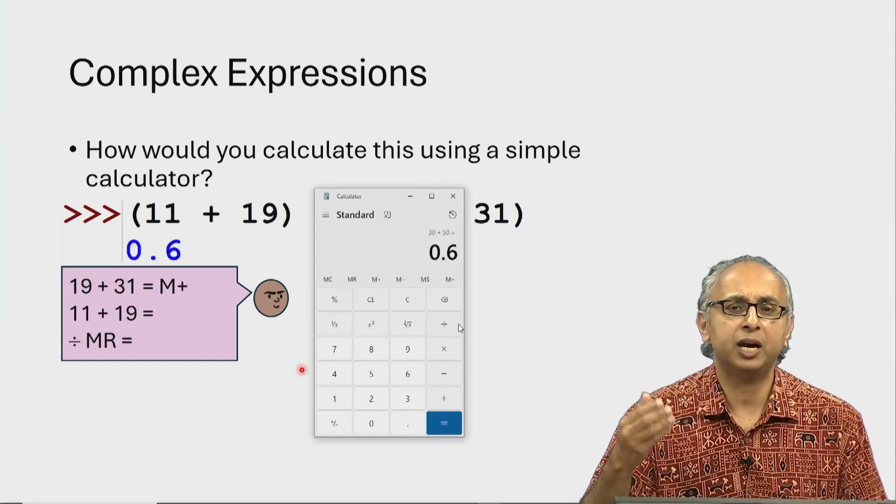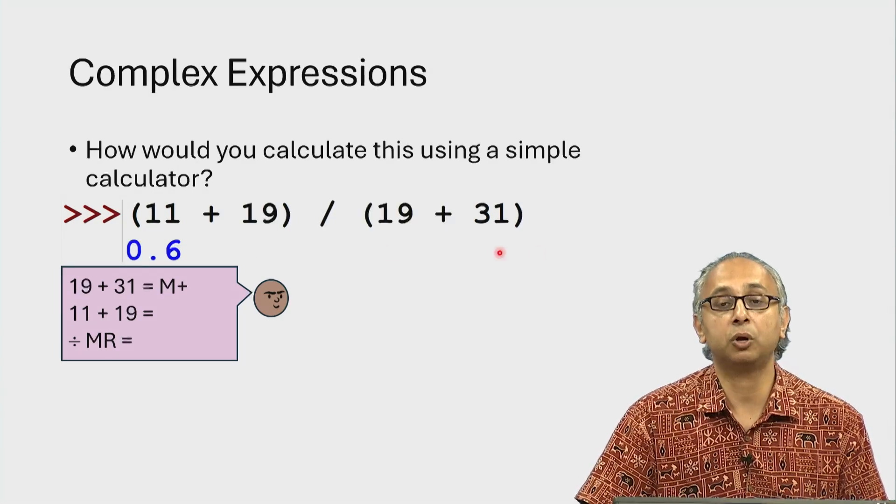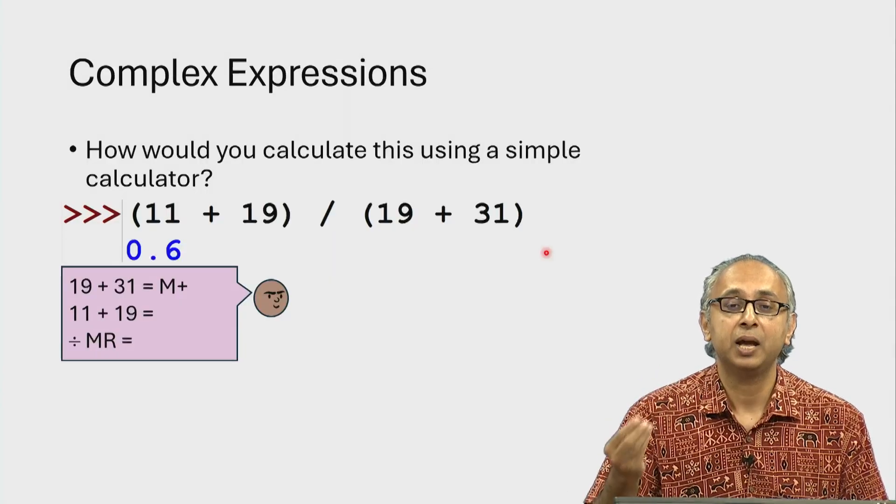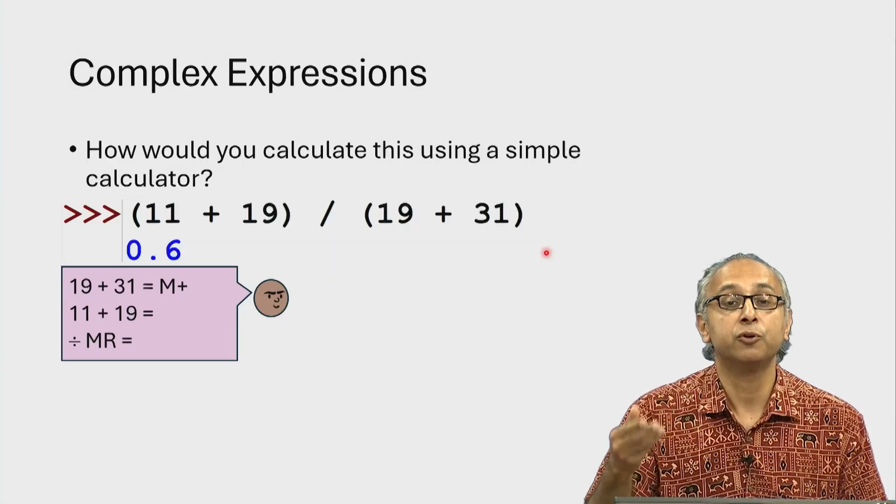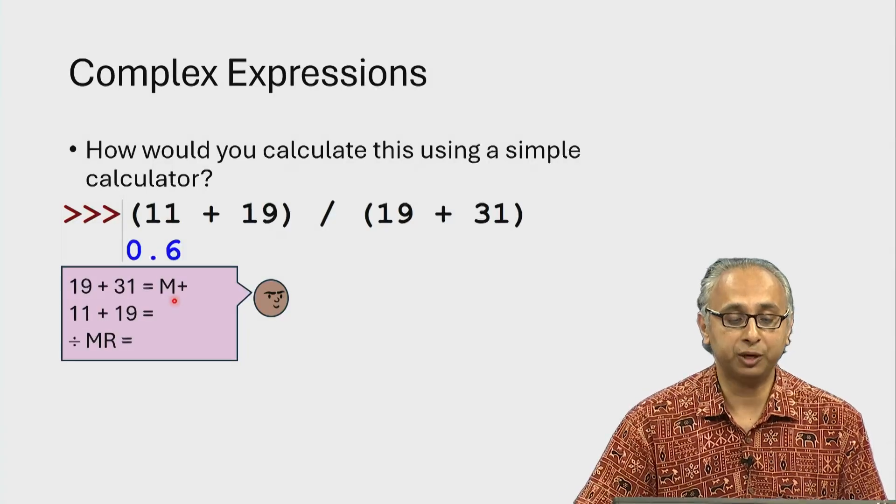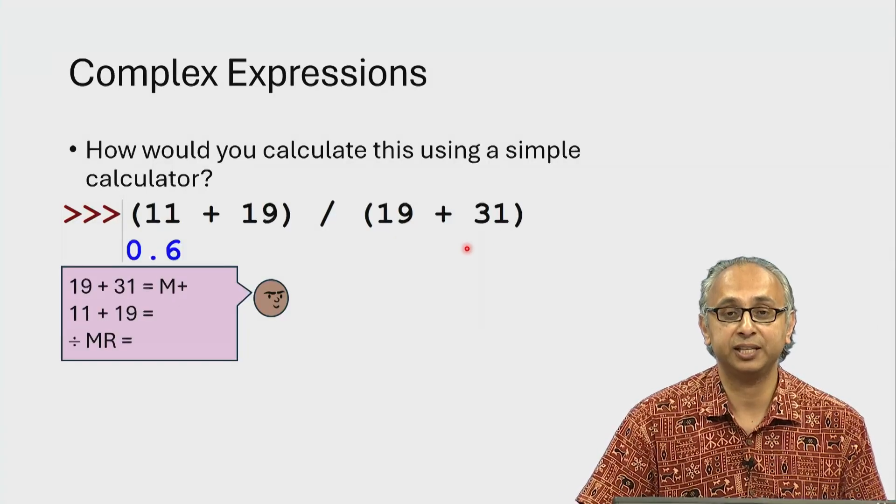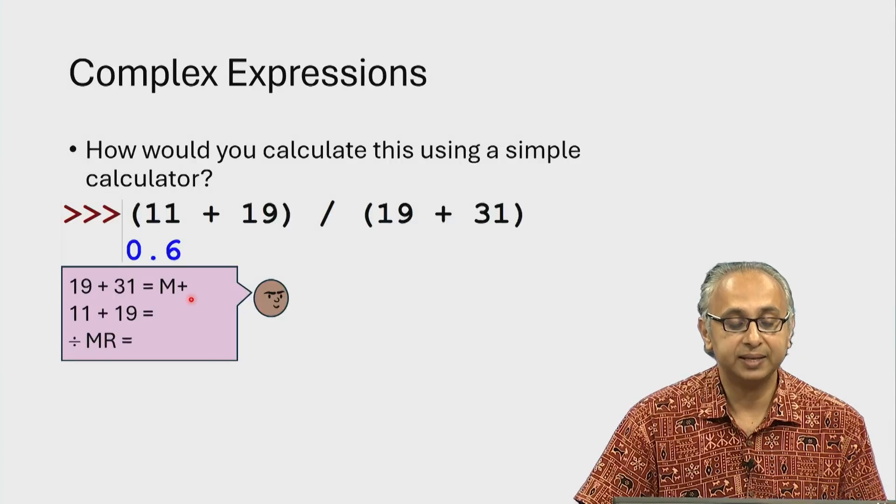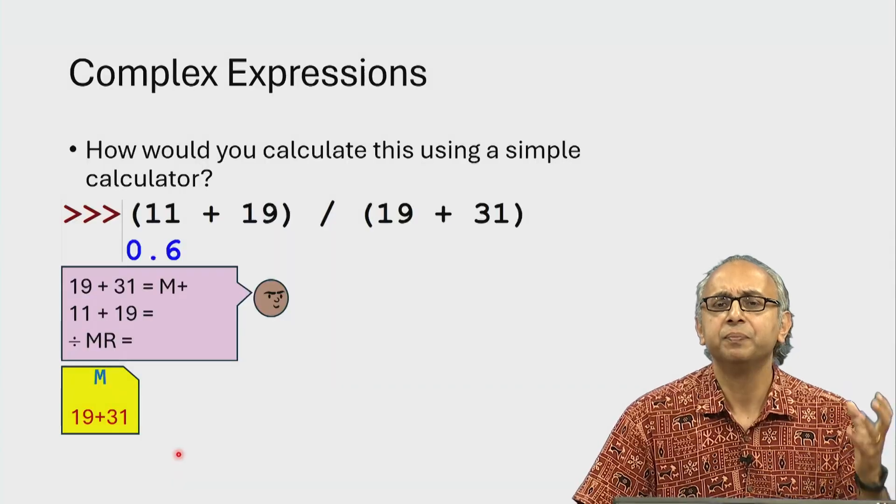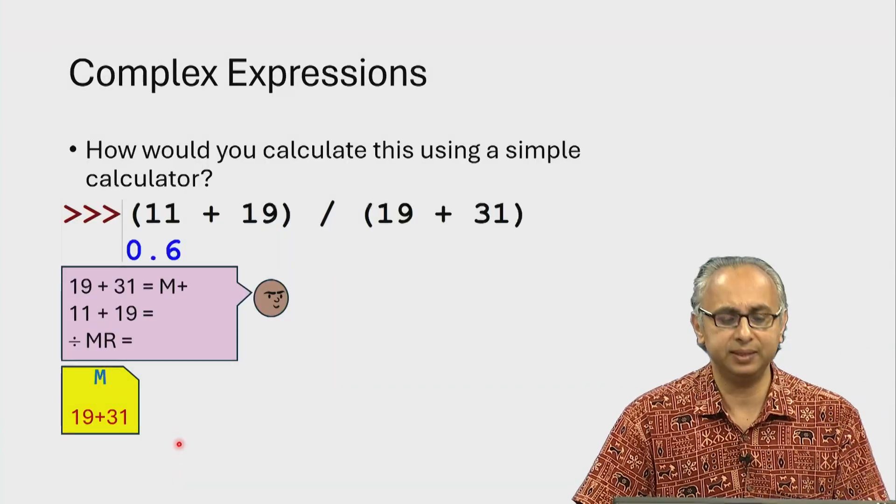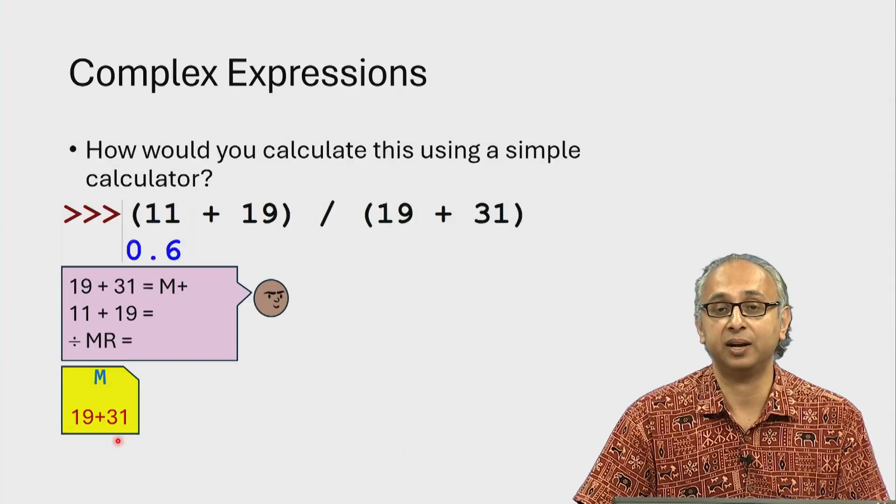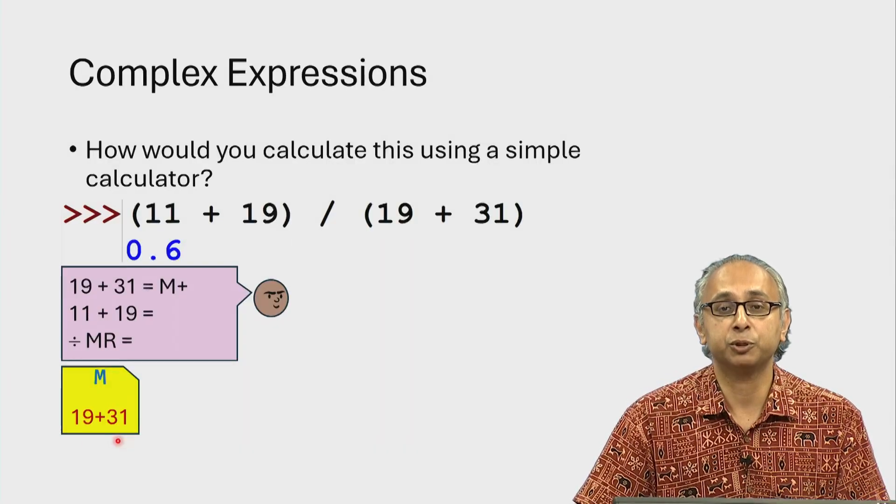So how did our friend decompose this complex problem? It was complex to do on the calculator. How were they able to decompose this for the purposes of the calculator? Well, they knew they could start by first calculating the denominator and saving it to memory using the M plus button. So conceptually in their mind there is some space in the calculator labeled M where they have saved this answer 19 plus 31 which was 50.